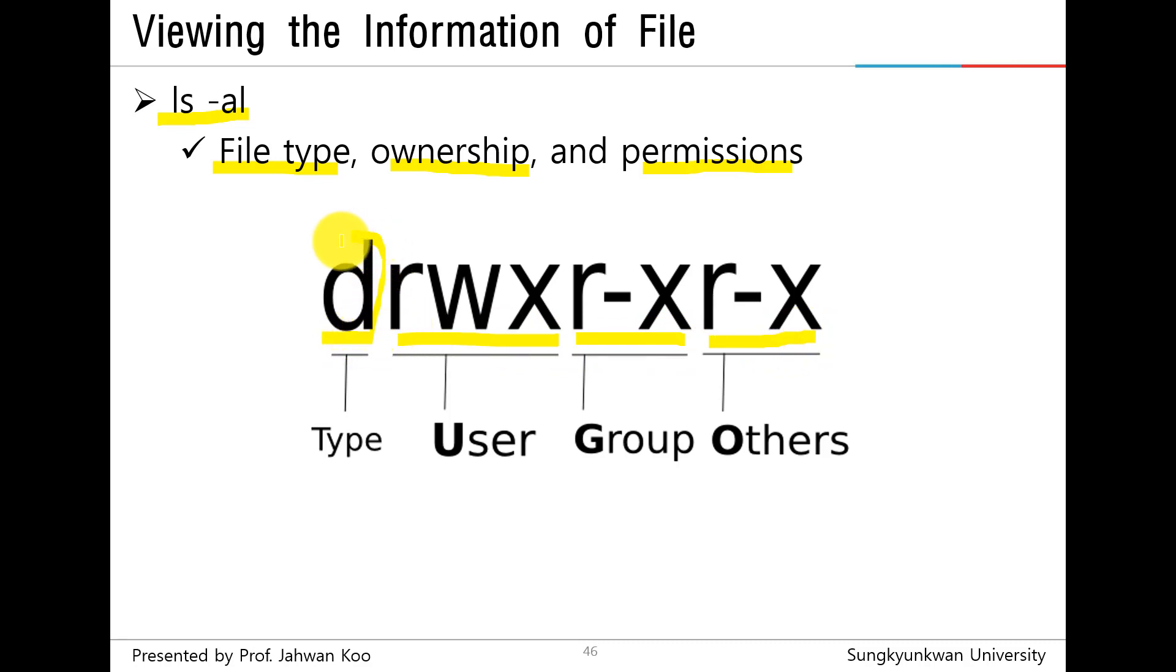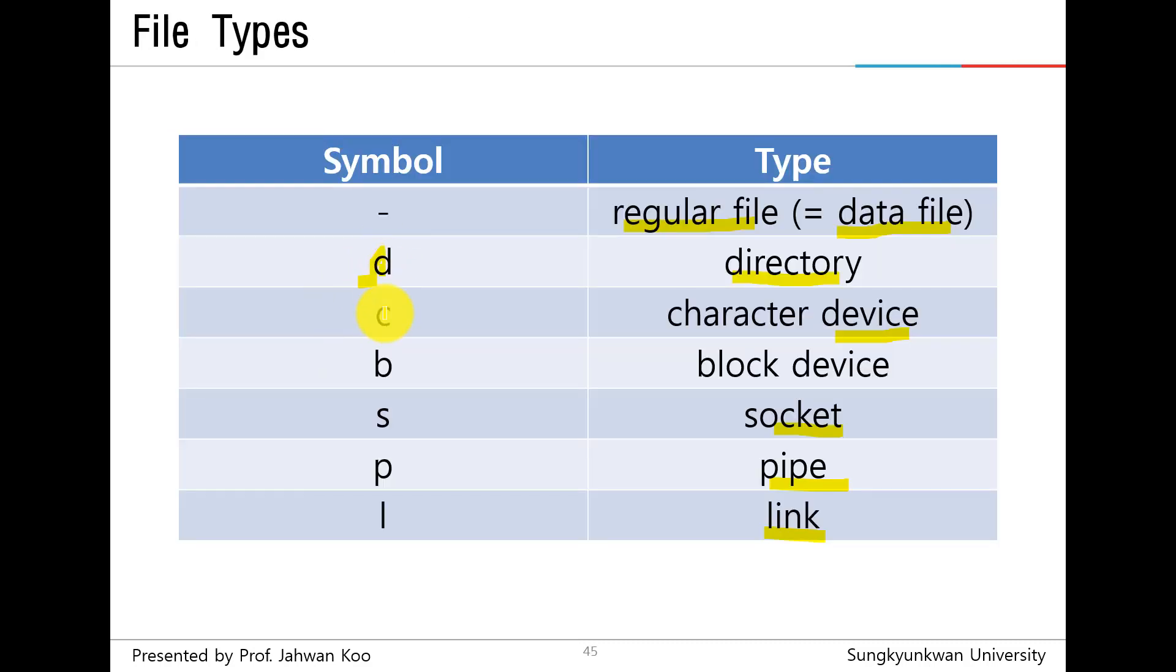The first bit may be set for one of the file types. For example, d is directory, c is character device, b is block device, s is socket, p is pipe, l is symbolic link. Like this.